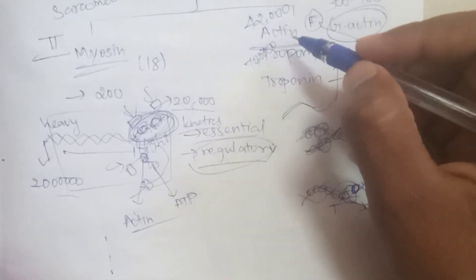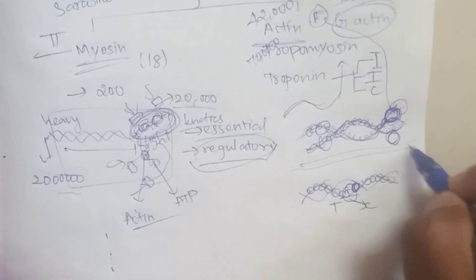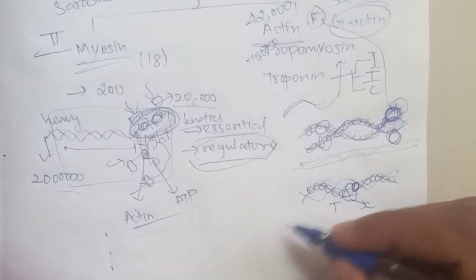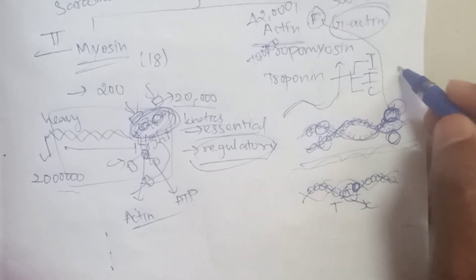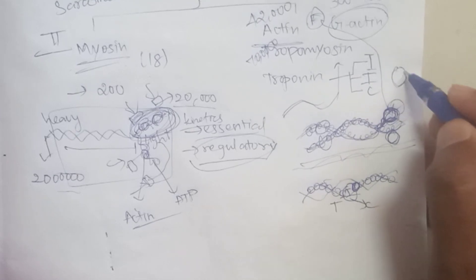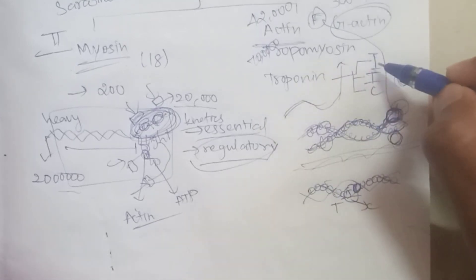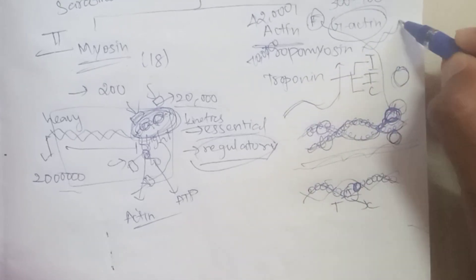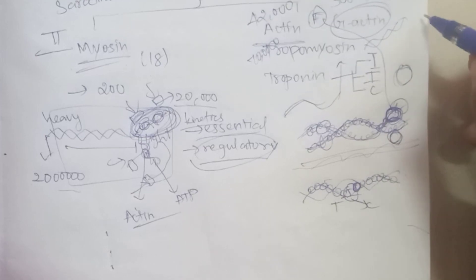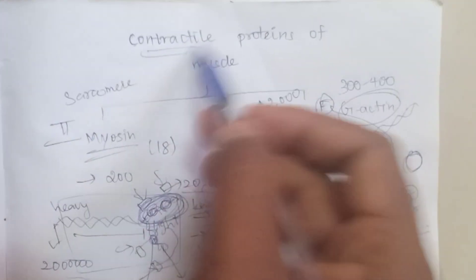So in this condition, our muscles undergo contraction. The F-actin and tropomyosin arrangement is what enables contraction. These are the contractile proteins of the muscle.